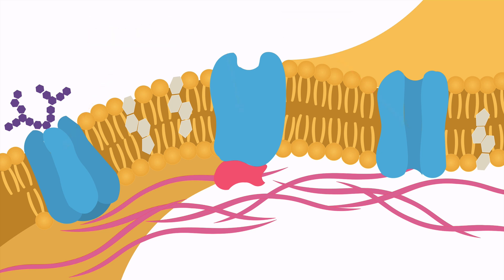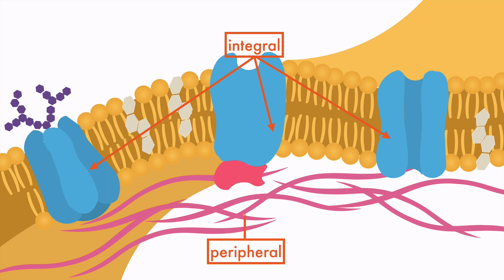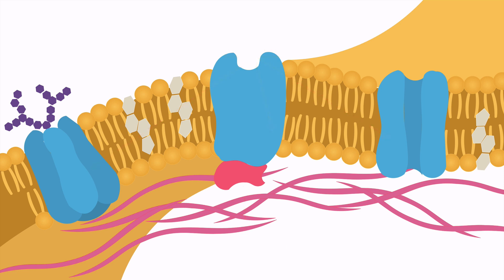Those three proteins are also integral proteins, because they are integrated into the lipid bilayer. This pink-colored protein that's on the edge of the membrane is called a peripheral protein. Just like your peripheral vision is at the edge of your vision, peripheral proteins are on the edge of the membrane. The proteins all create a speckled, mosaic appearance on the membrane, but they aren't locked into one place — they can move around through the phospholipids. Because of this, we say the cell membrane is a fluid mosaic.